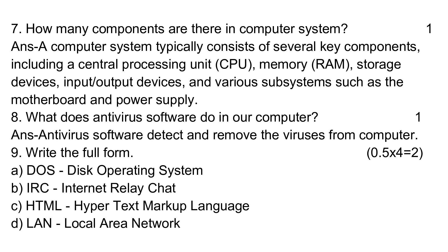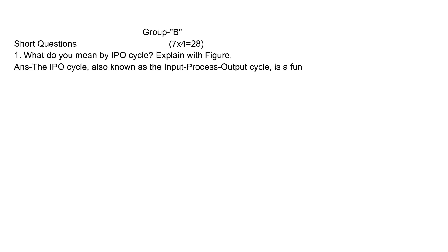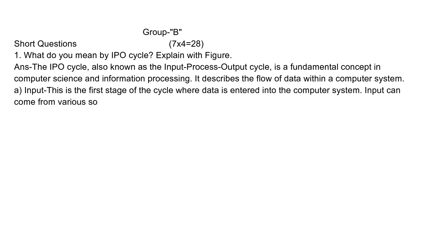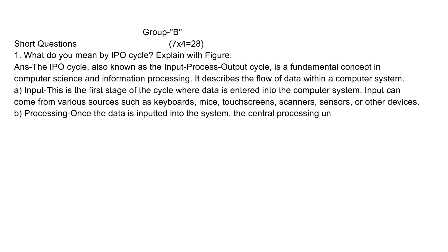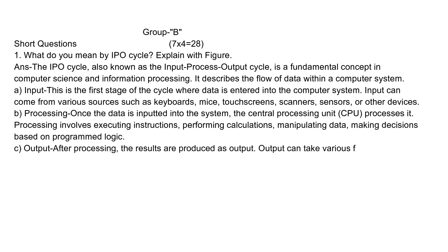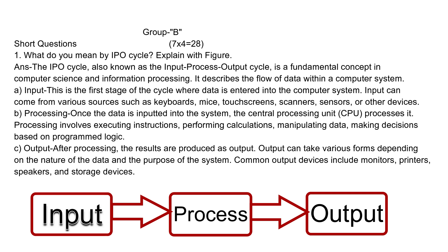D: LAN: Local Area Network. Group B: Short questions. One: What do you mean by IPO cycle? Explain with figure. Answer: The IPO cycle, also known as the Input Process Output cycle, is a fundamental concept in computer science and information processing.